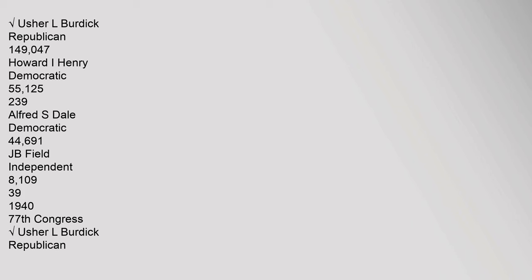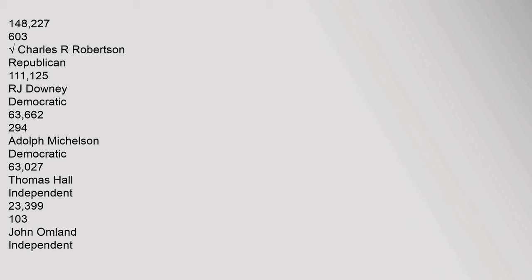1938 (76th Congress) — William Lemke, Republican: 153,106 (72.3%); Usher L. Burdick, Republican: 148,227 (60.3%); Charles R. Robertson, Republican: 149,149; Howard I. Henry, Democratic: 55,125 (23.9%); Alfred S. Dale, Democratic: 44,691; J.B. Field, Independent: 8,109. 1940 (77th Congress) — Usher L. Burdick, Republican: 148,227 (60.3%); Charles R. Robertson: 111,125; R.J. Downey, Democratic: 63,662; Adolph Michelson, Democratic: 63,027; Thomas Hall, Independent: 23,399.